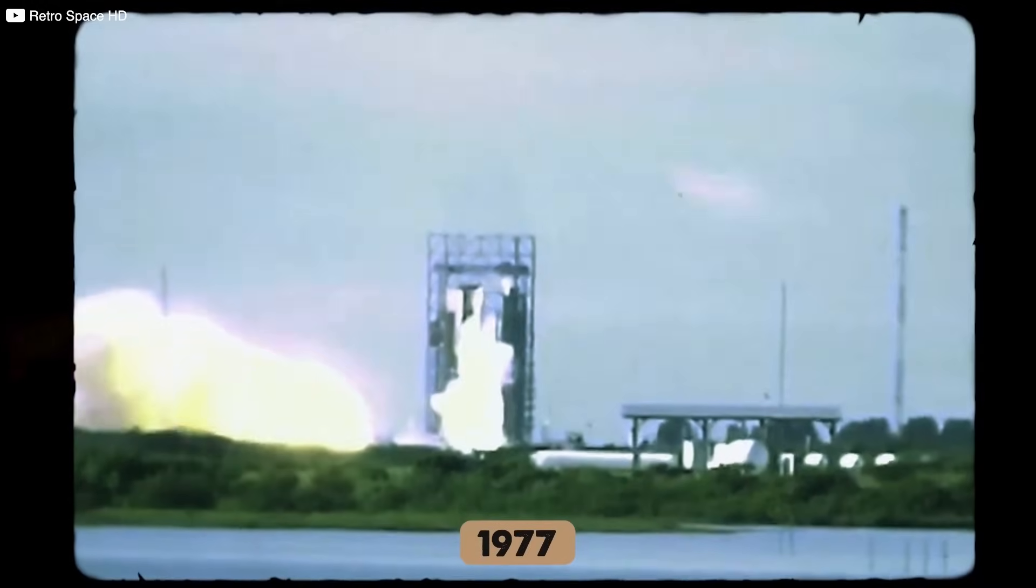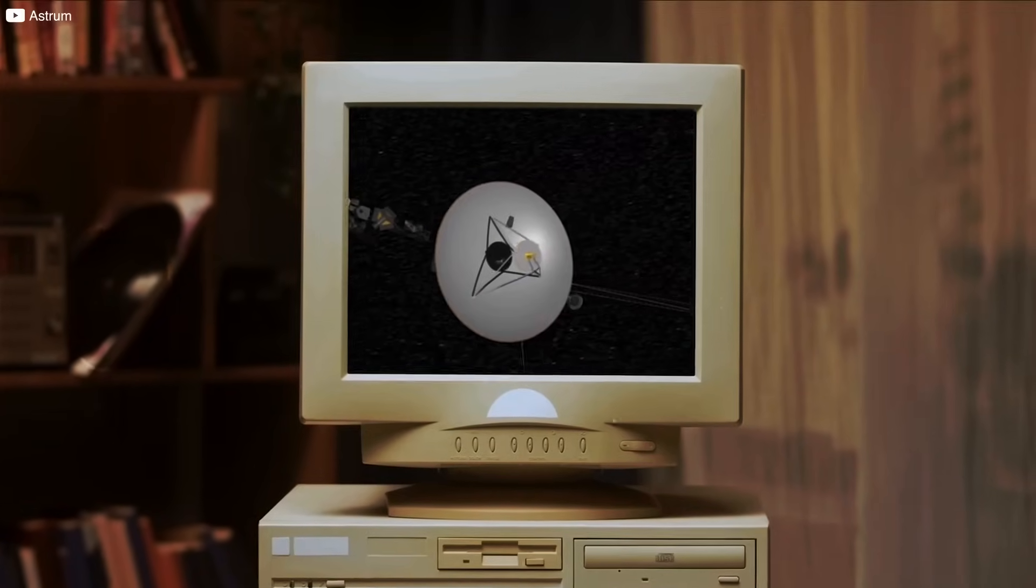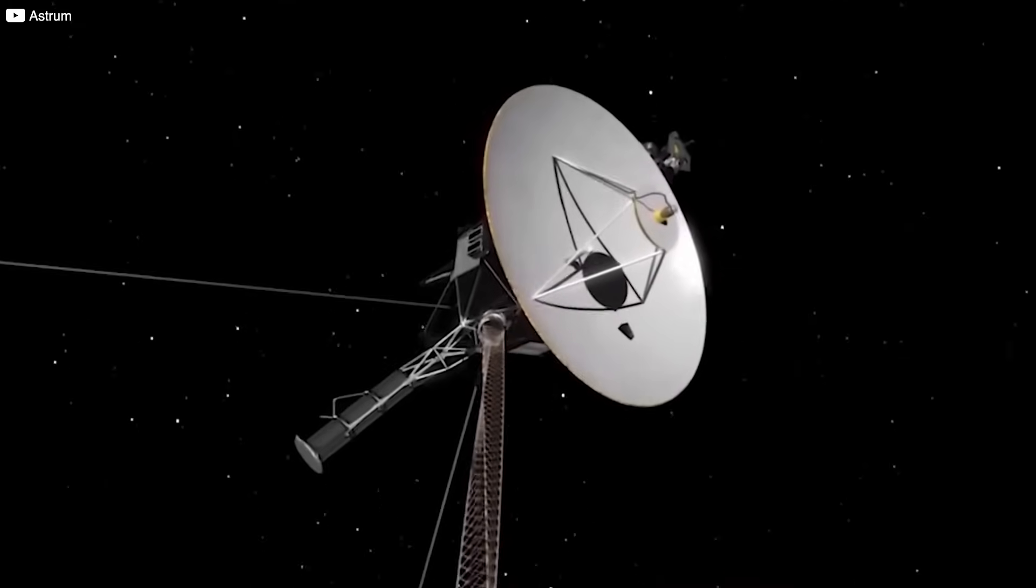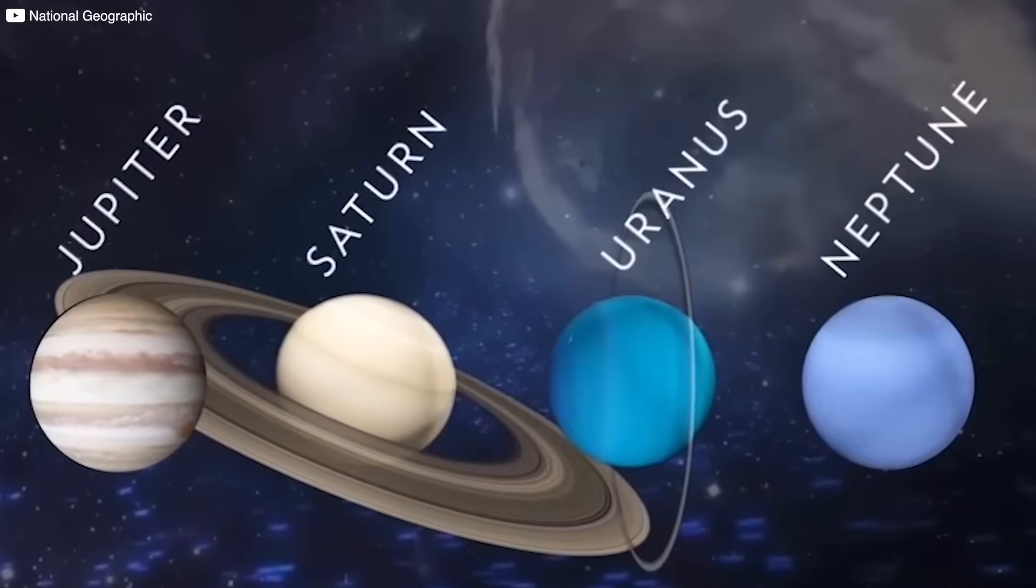In 1977, Voyager 2 launched first, followed shortly by Voyager 1, embarking on the ambitious grand tour of the gas and ice giants: Jupiter, Saturn, Uranus, and Neptune.